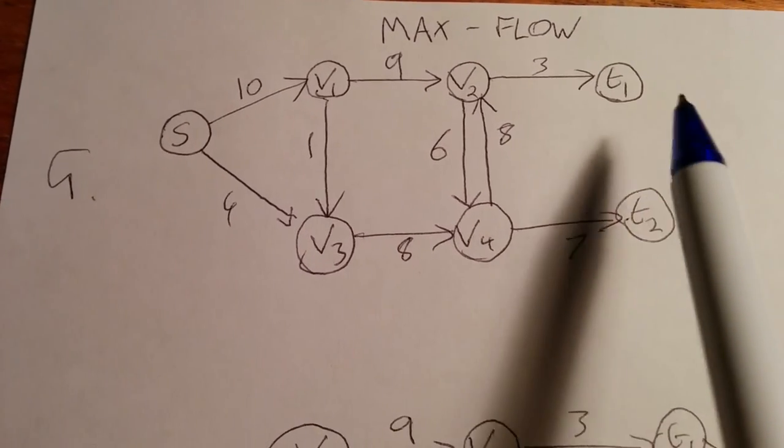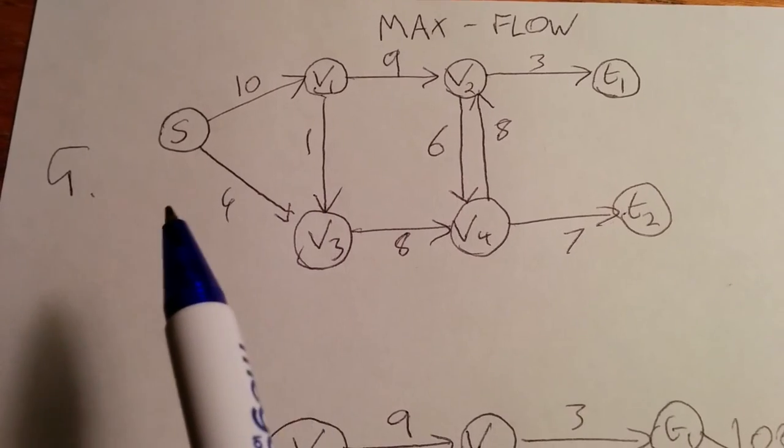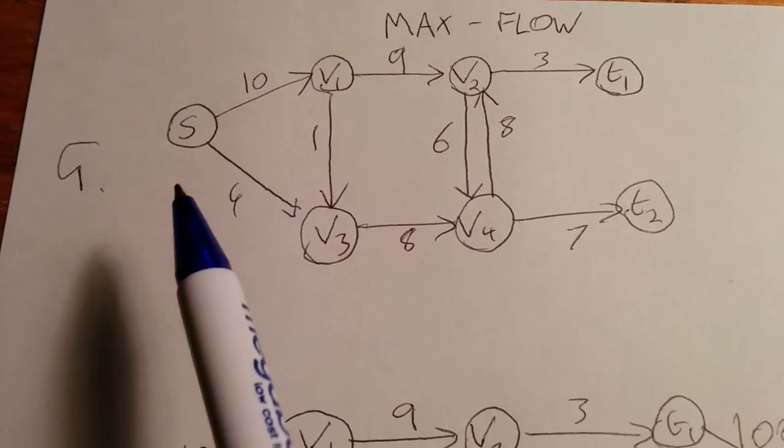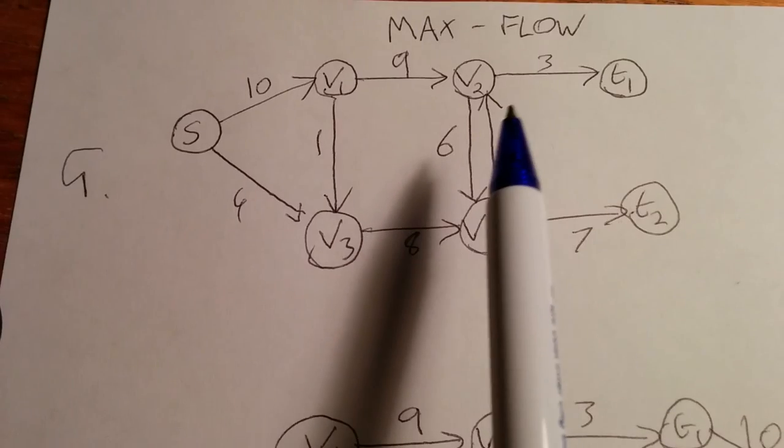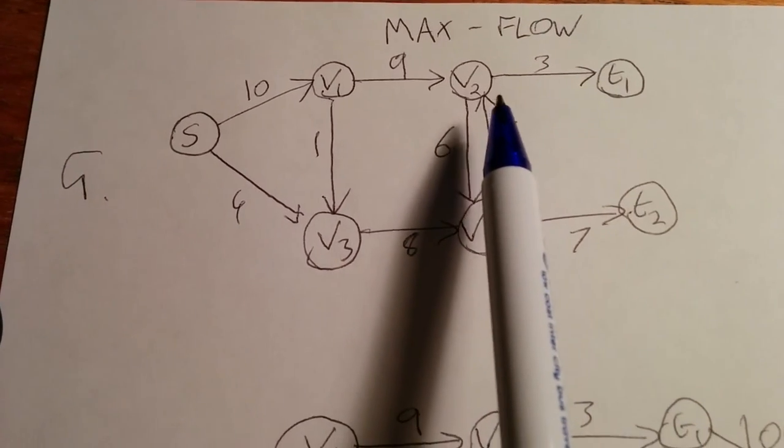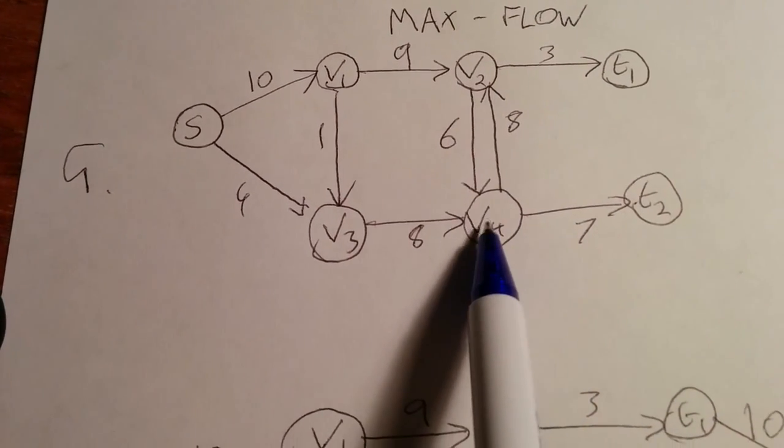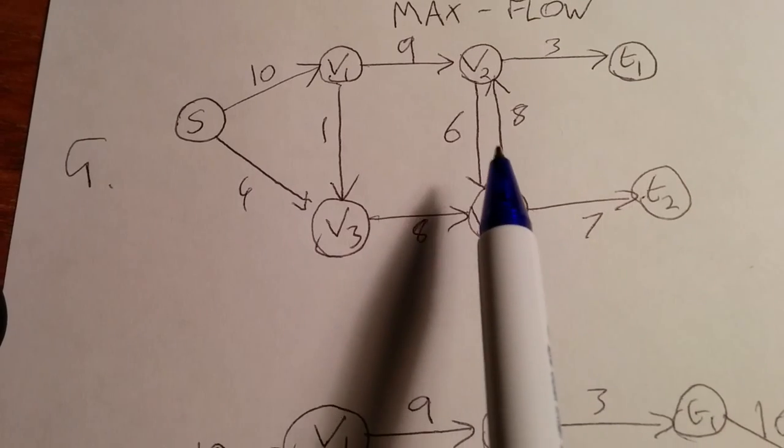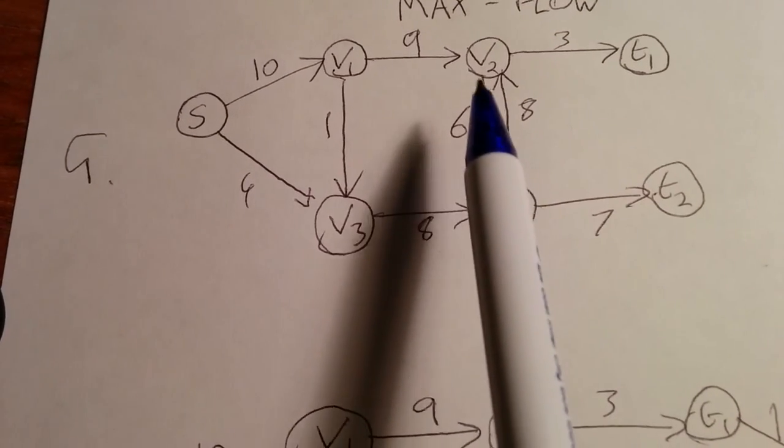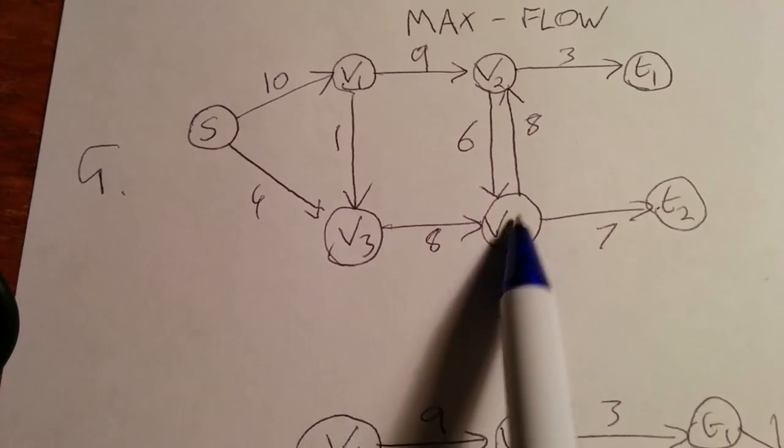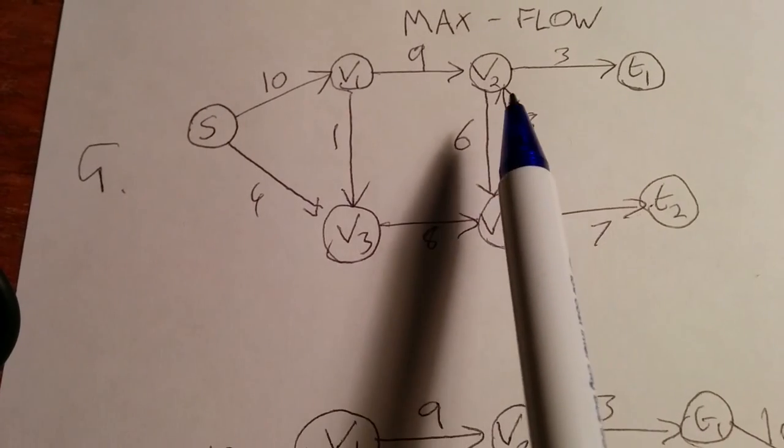The super sink is connected to both of these, just as if we had two sources, we would make a super source which connects to the two sources. Before adding this super sink, also notice that between V2 and V4, we have multiple edges, when we only really want one. We have an edge with flow 6 going from V2 to V4, and an edge with flow 8 going from V4 to V2.